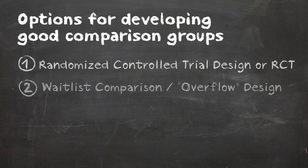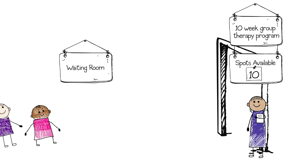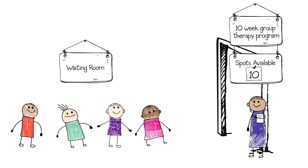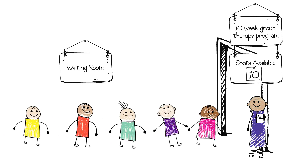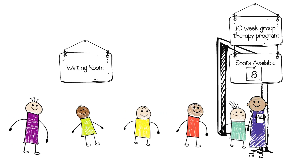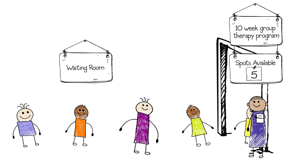One alternative is called a waitlist comparison or overflow design. This option could be used, for example, to test a new group therapy model for adolescents. With the waitlist design, all the teenagers eligible for the new therapy model are served on a first-come, first-served basis, depending on the service capacity of the therapist.